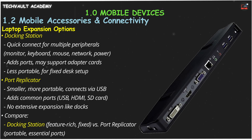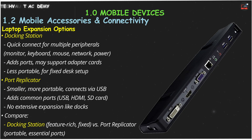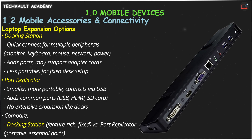A port replicator is similar, but usually smaller, more portable, and connects via USB. It adds common ports like USB, HDMI, and card readers, but doesn't typically offer the extensive expansion of a docking station — it's like a travel-sized multi-tool for your laptop's ports. Comparing them, docking stations are more feature-rich and less portable, designed for a fixed desk. Port replicators are lightweight and great for adding essential ports on the move.